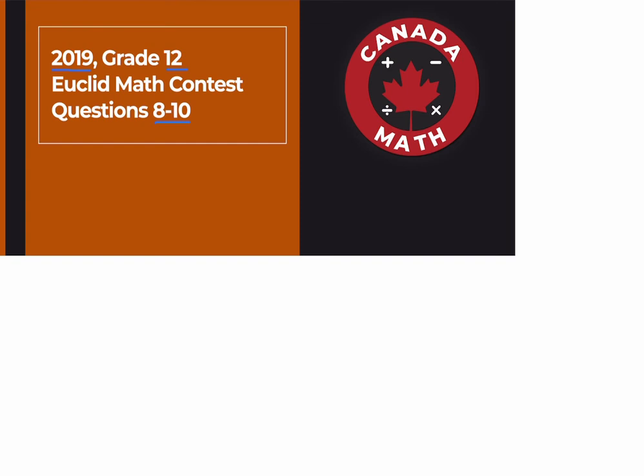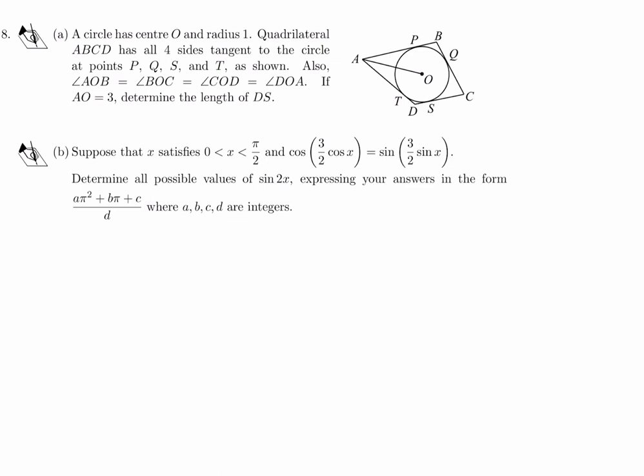Questions 8 through 10 on the 2019 Grade 12 Euclid Math Contest. A circle has center O and radius 1. Quadrilateral ABCD has all four sides tangent to the circle at points P, Q, S, and T. Also, angle AOB equals angle BOC equals angle COD equals angle DOA. If AO is 3, determine the length of DS.